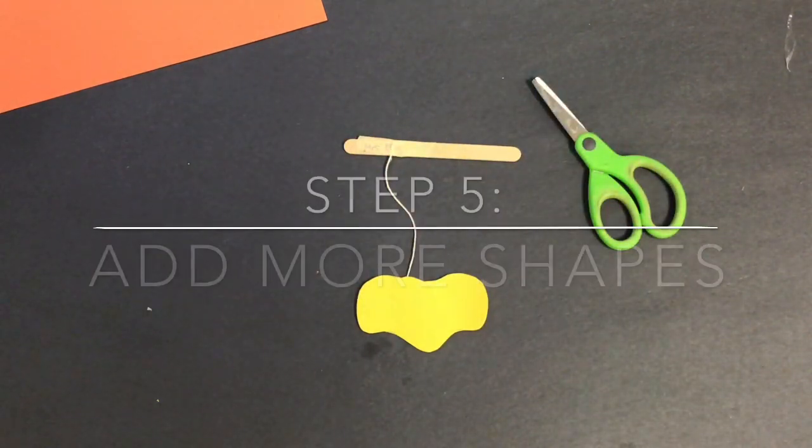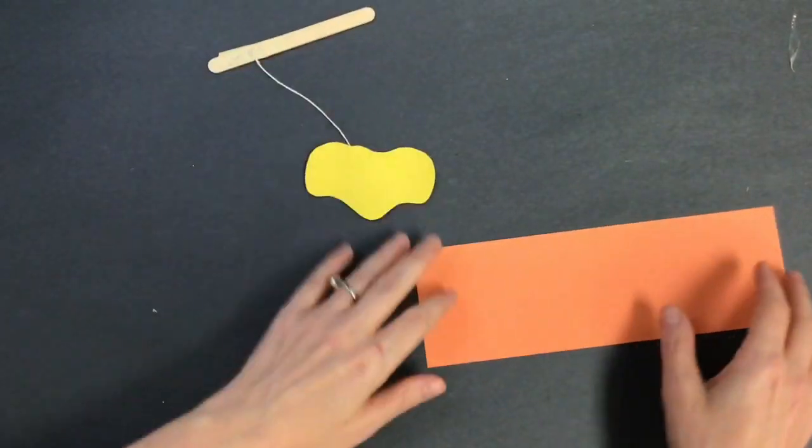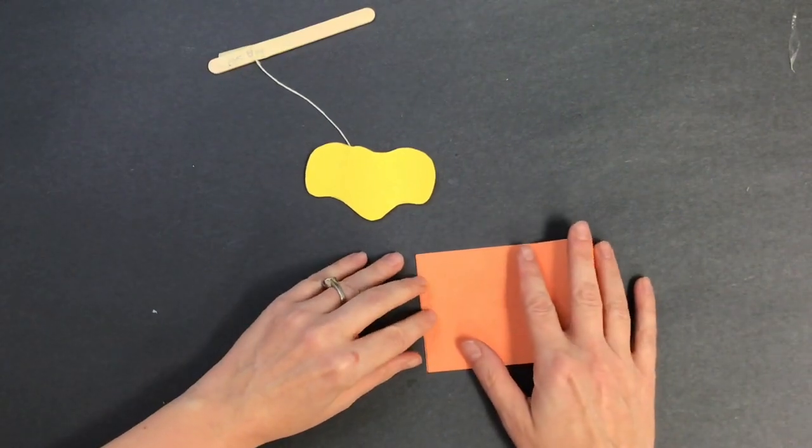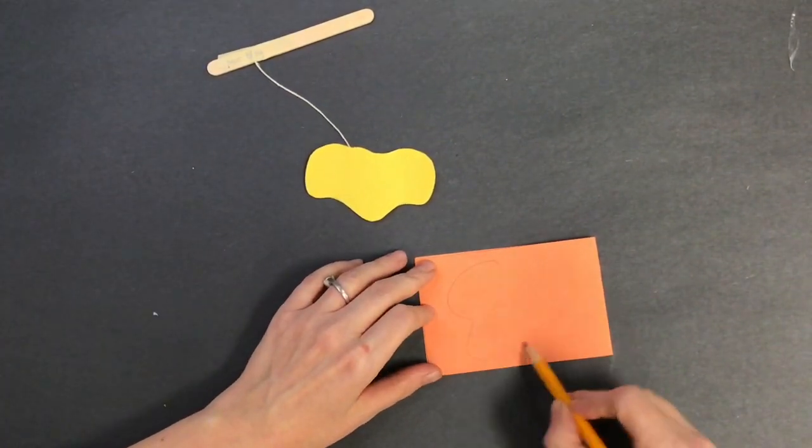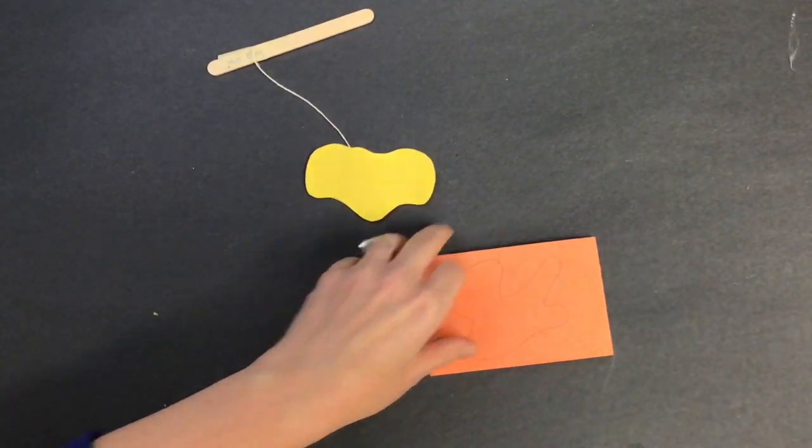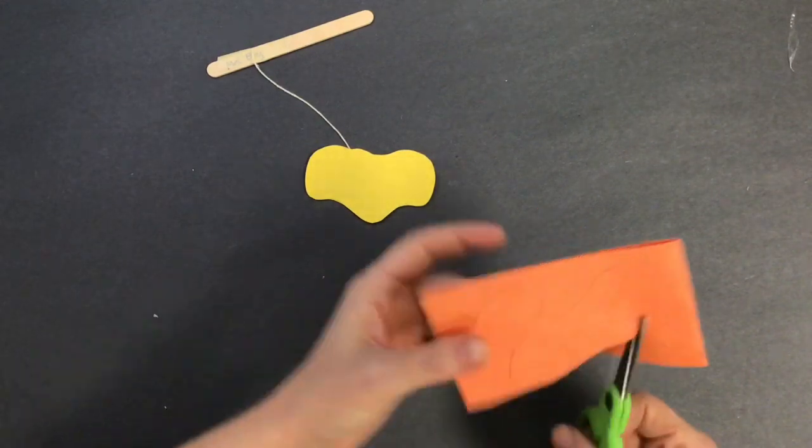Step number five is an optional step, add more shapes. For students in older grades, this shouldn't be an optional step because you should have plenty of time to do this. You're going to take another piece of paper, it can be the same color or different, draw a different design, cut, tape the string, attach the shapes, and attach it to the stick.